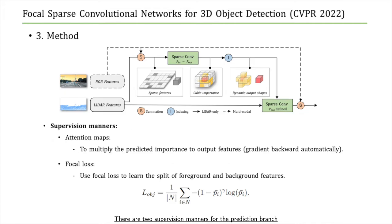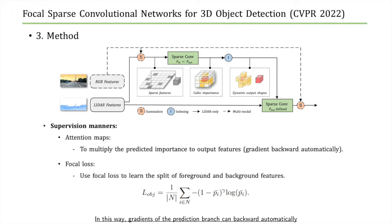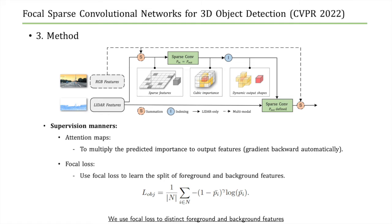There are two supervision manners for the prediction branch. The first is attention maps: we multiply the predicted importance to output features, allowing gradients of the prediction branch to backpropagate automatically. The second is objective loss: we use focal loss to distinguish foreground and background features, because foreground objects are more important than the background.